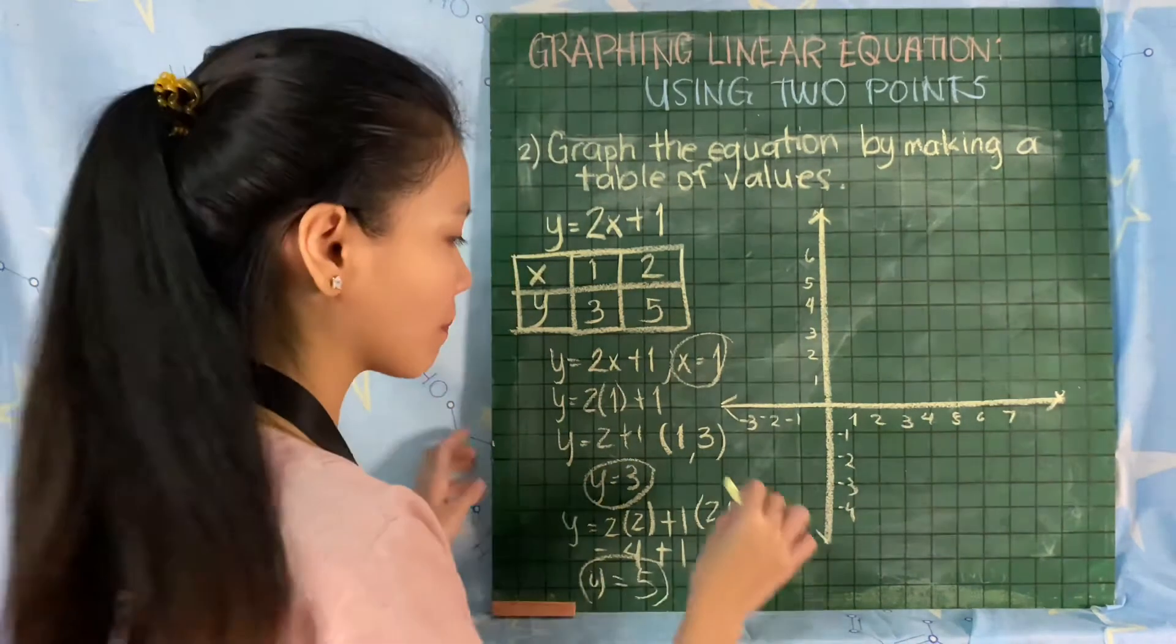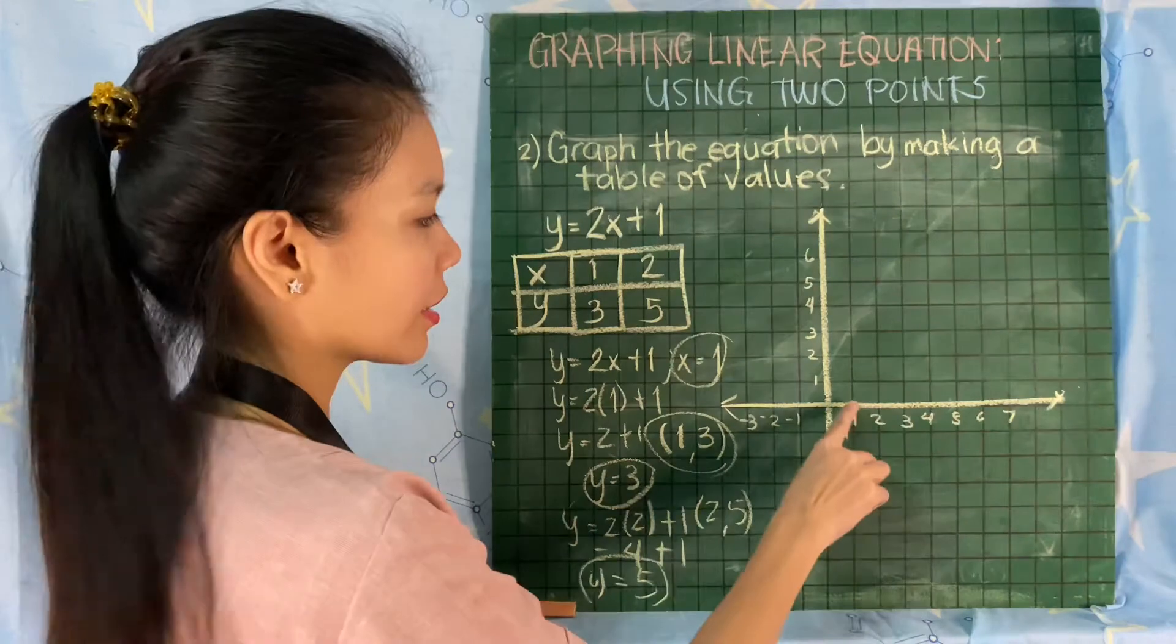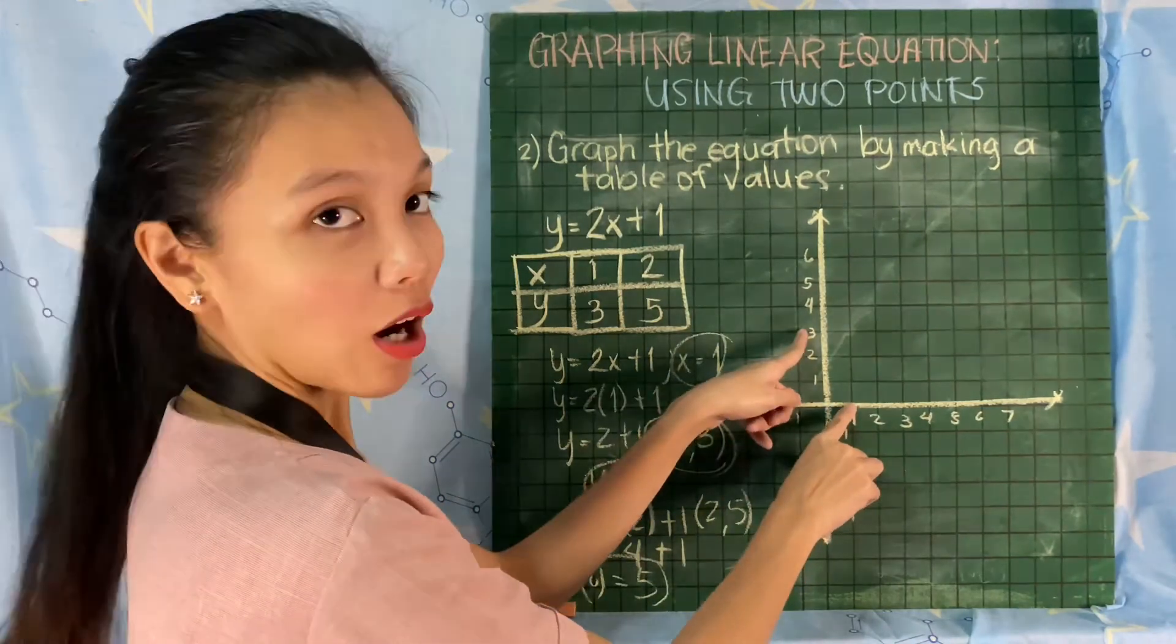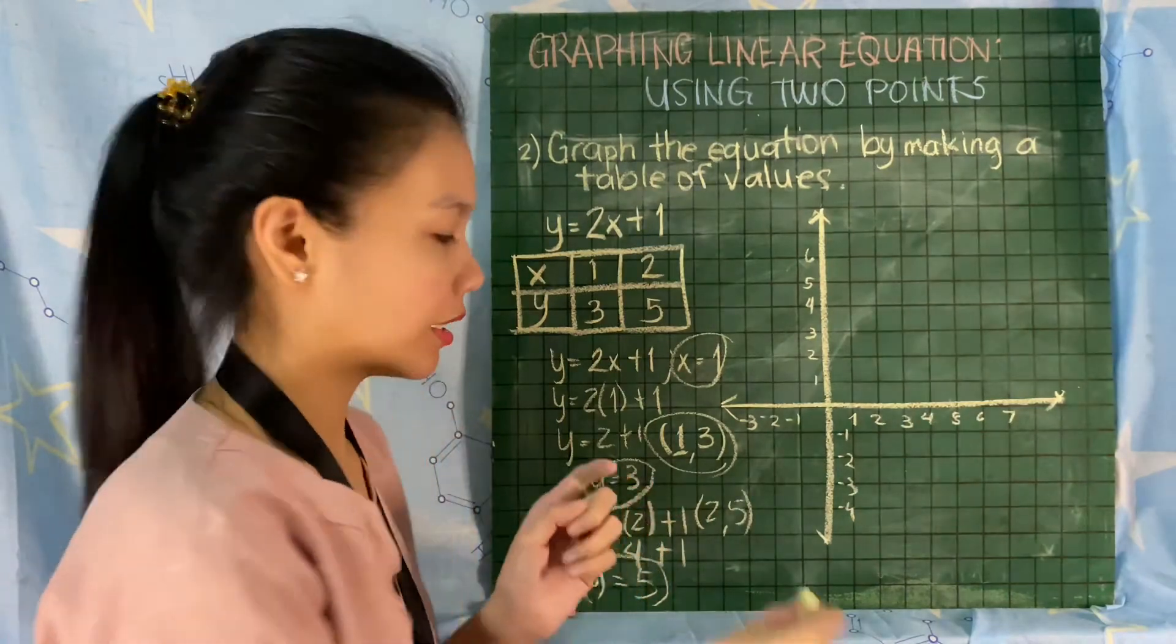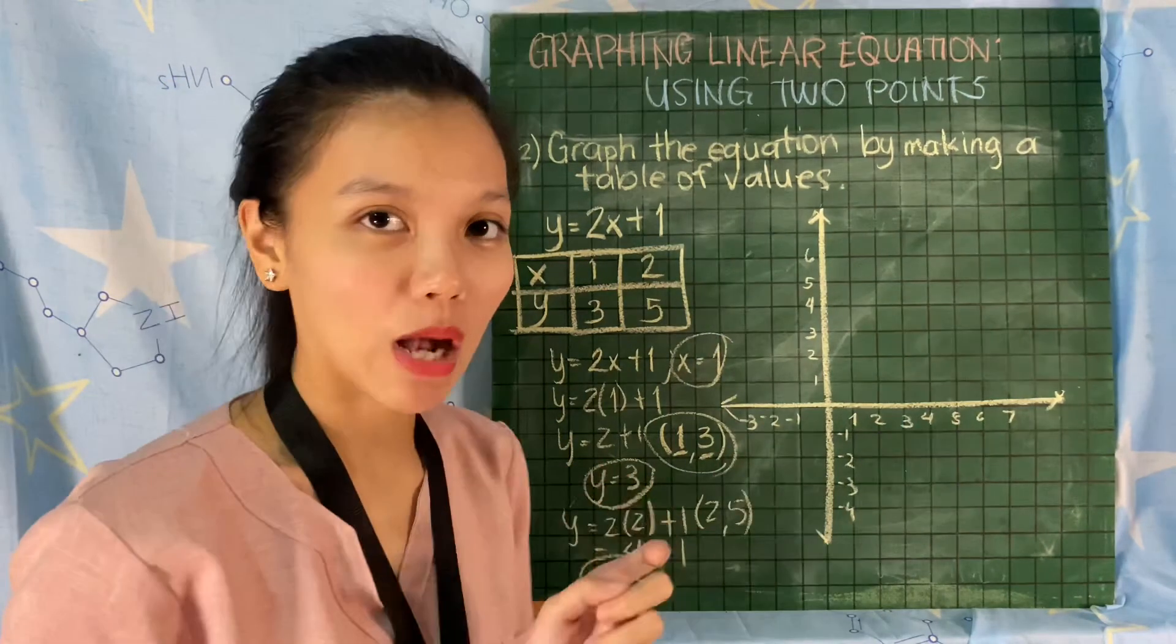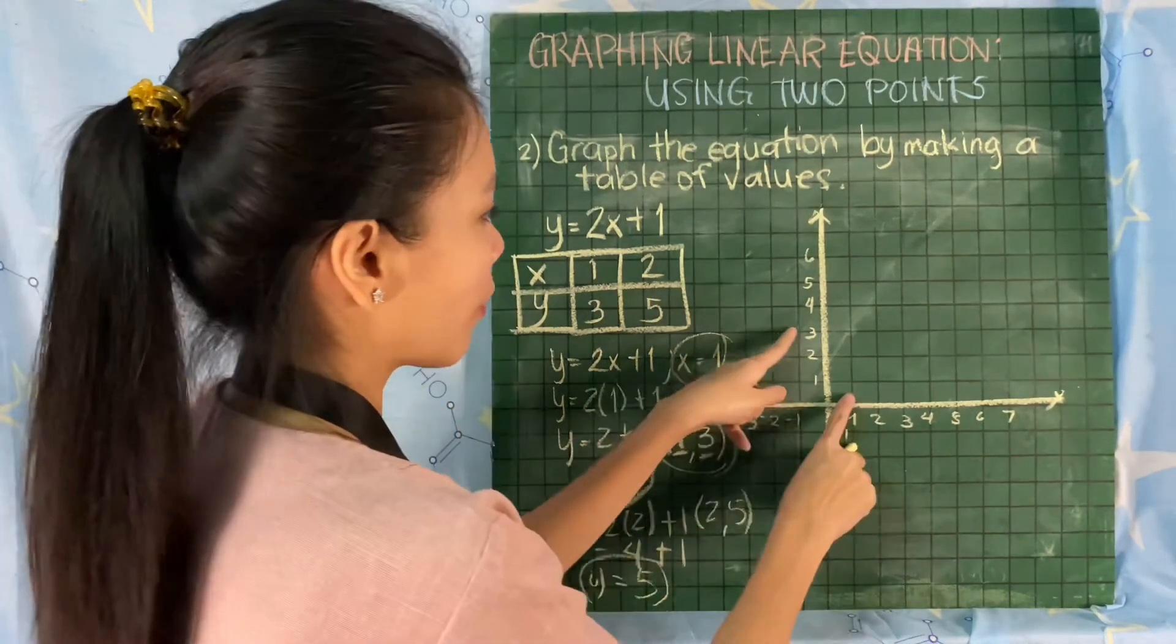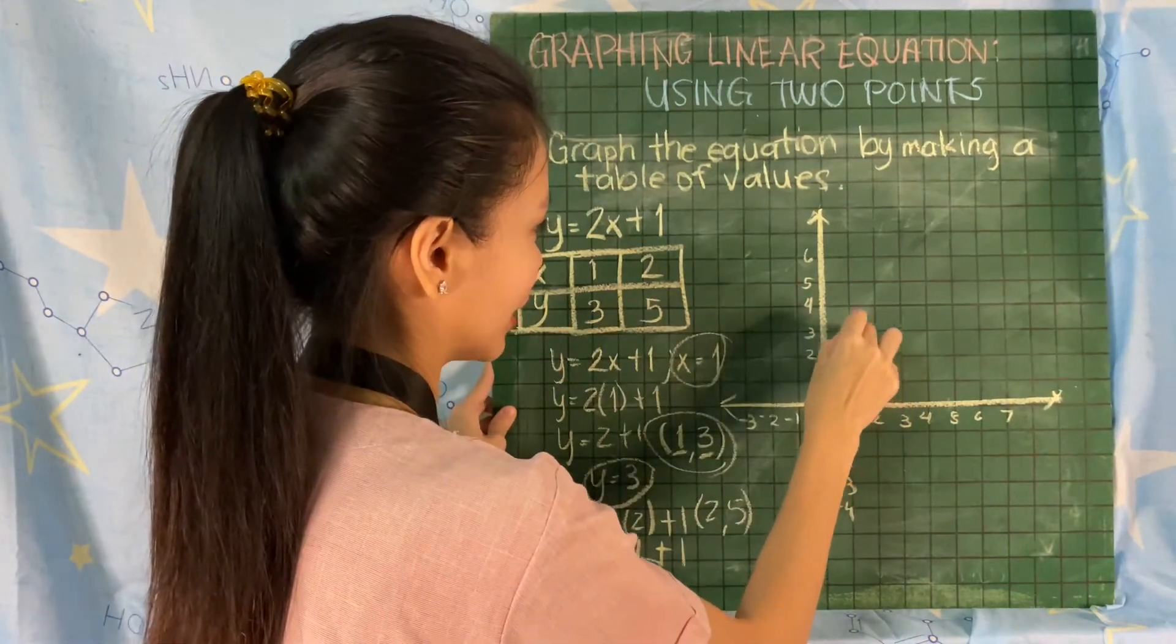We have (1, 3). This is 1 and this is 3. Always remember, the first number is the value of x and the second number is our y. So we have (1, 3). This will be its point.